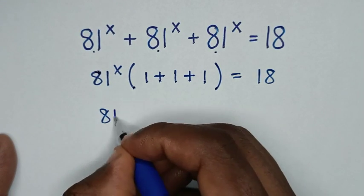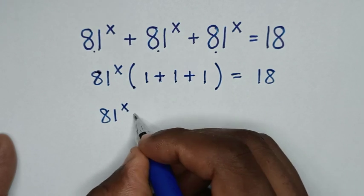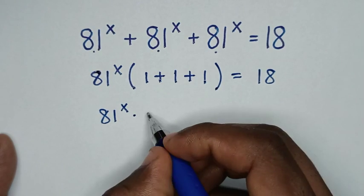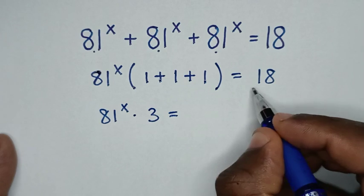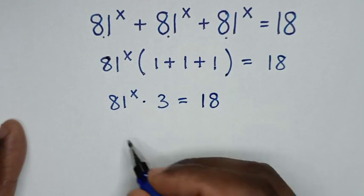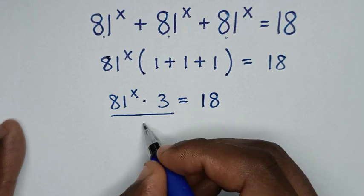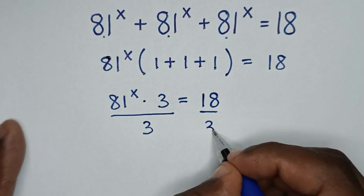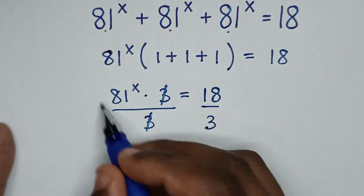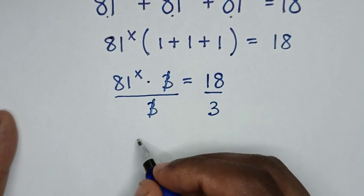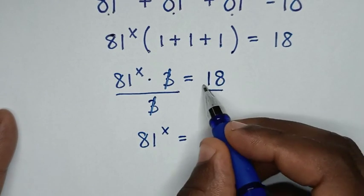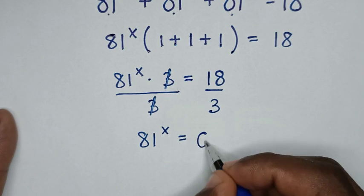In the next step, it will be 81 power of x times 1 plus 1 plus 1, which is 3, equal to 18. Then we'll divide by 3 on both sides, so this will cancel, and it will be 81 power of x is equal to 18 divided by 3, which is 6.